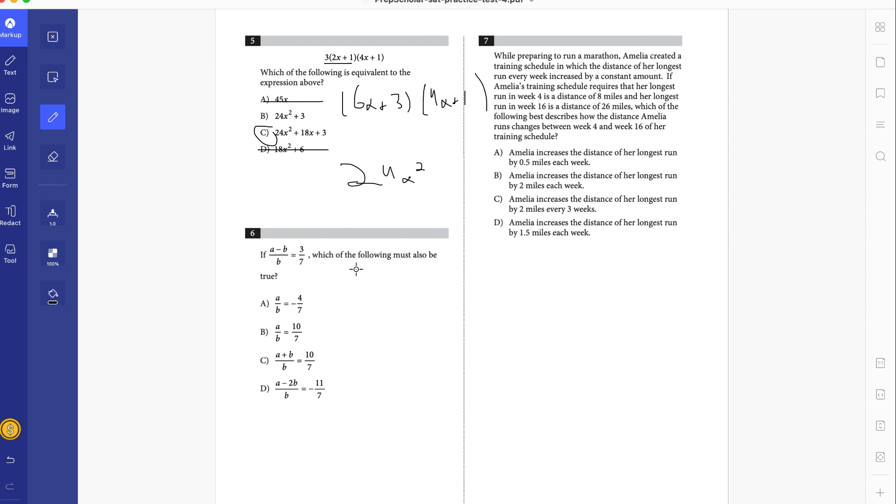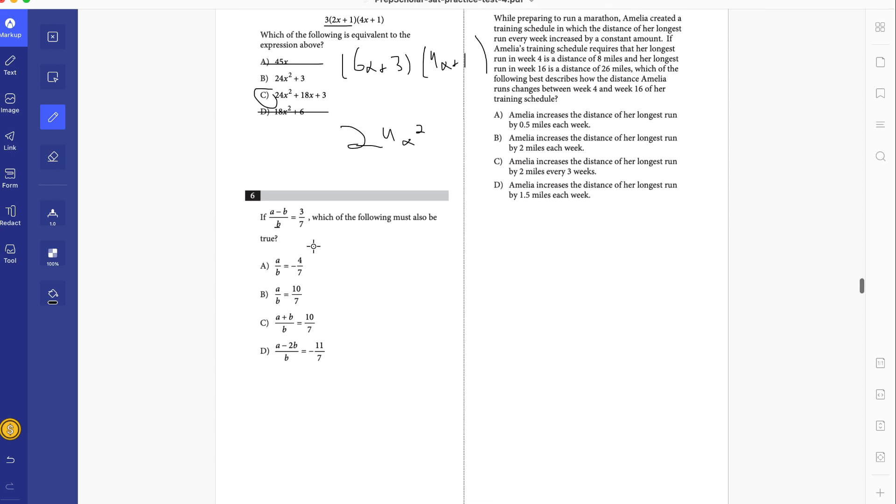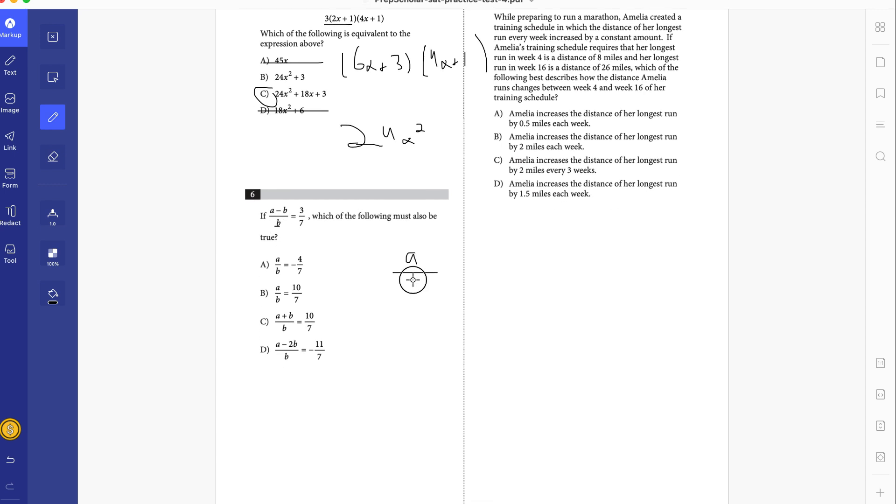If a minus b over b equals 3 over 7, which of the following must be true? Let's quickly find one of the values. Since this is a single denominator, we can split the fraction up. We have a over b minus 1. I think this would be minus b over b, and equals 3 over 7. So if we add 1 to both sides, we get a over b is equal to 10 over 7.